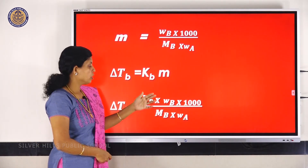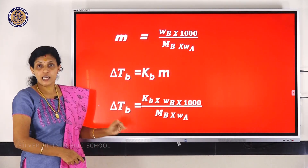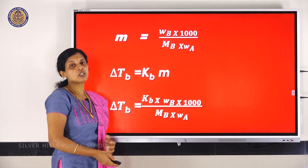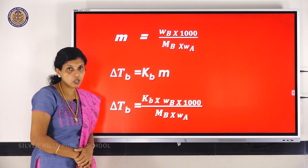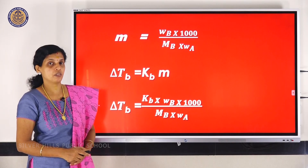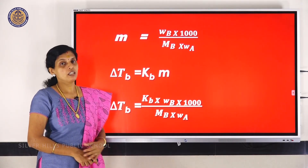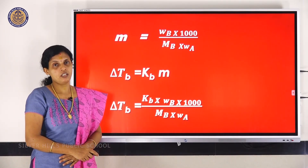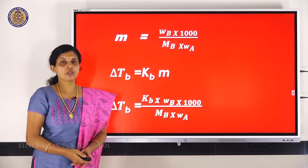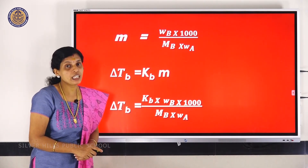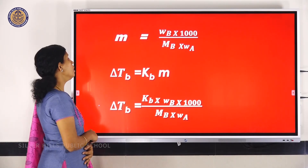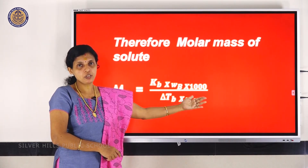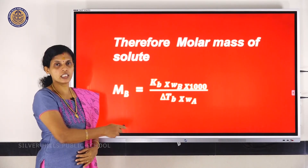So delta Tb = Kb × Wb × 1000 / (Mb × Wa). Here delta Tb is elevation in boiling point, Kb is the ebullioscopic constant, Wb is the weight of solute, Wa is the weight of solvent, and Mb is the molecular mass of solute. If we know delta Tb, Kb, Wb, and Wa, we can directly calculate Mb. Rearranging: Mb = Kb × Wb × 1000 / (delta Tb × Wa). This is the determination of molecular mass as the main application of colligative properties.